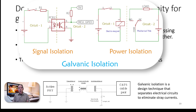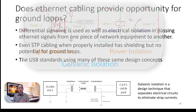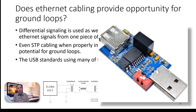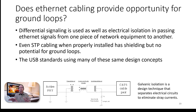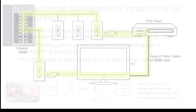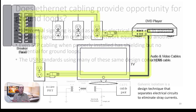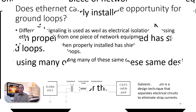Electrical engineers call this galvanic isolation. It's used by shielded twisted pair and unshielded twisted pair. It's also used in the design of USB cables, FireWire cables, and HDMI cables. All of them provide isolation between the cable and the electrical equipment that it connects to. This avoids ground loops.